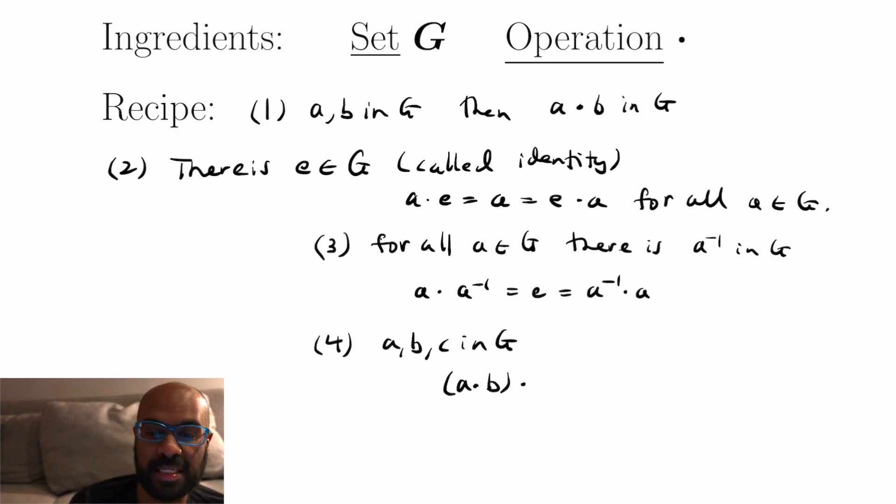And then lastly is this property called associativity where if you take three elements in the set G, when you apply the operation to a and b and then c, it's the same as you applying it to a and the result of b dot c. So this first property is called closure. The second one is having the identity. The third one is having inverses, which makes sense since we're talking about inverses, and this last one like I mentioned is associativity.